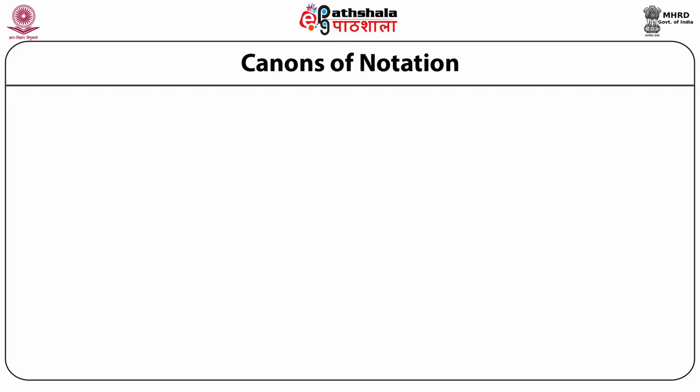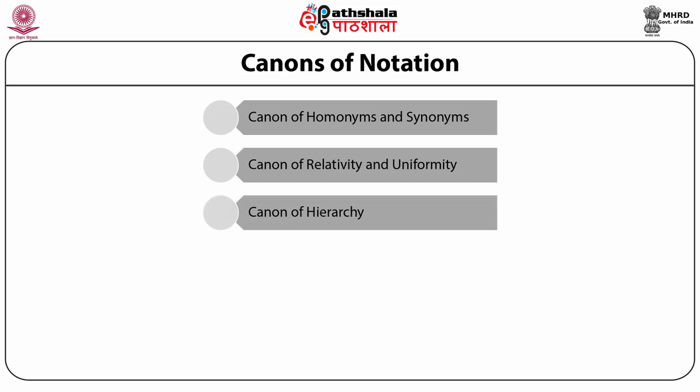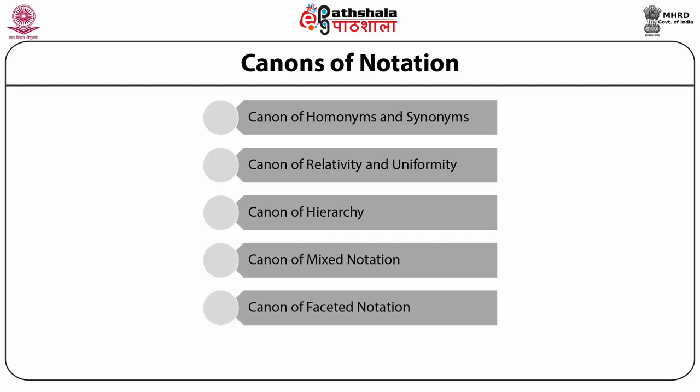Canons of notation: As in the idea and verbal planes, Ranganathan gave a long list of canons to be applied to notation chosen and its construction. These include: Canon of Homonyms and Synonyms, Canon of Relativity and Uniformity, Canon of Hierarchy, Canon of Mixed Notation, Canon of Faceted Notation, and Canon of Co-extensiveness.